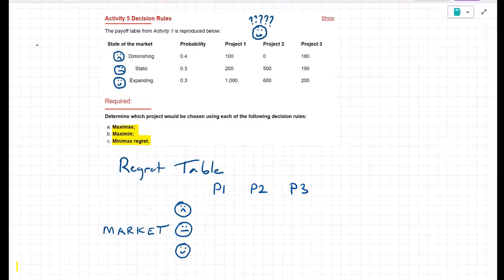I set up my regret table and I've used my projects as my column headings, the market states for my rows. Next, I'm going to look at each market state and find the project that gives the highest profit for each market state. For example, in a diminishing market, project three gives the highest profit.